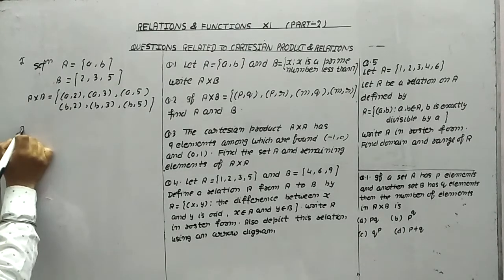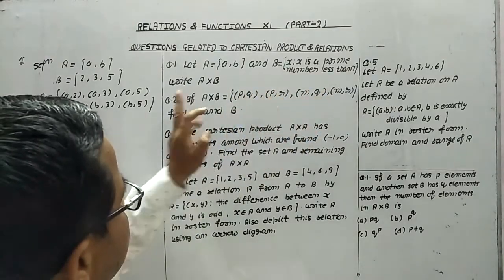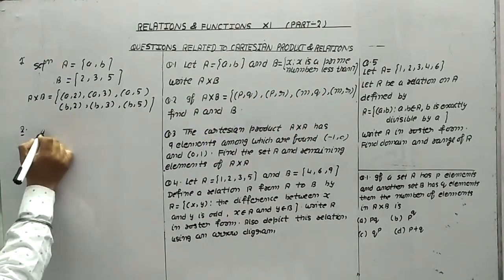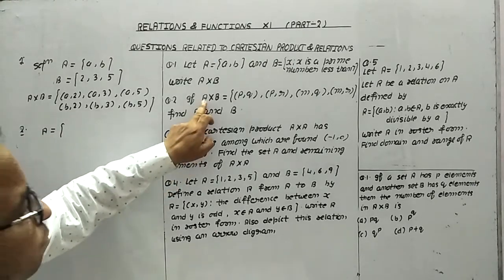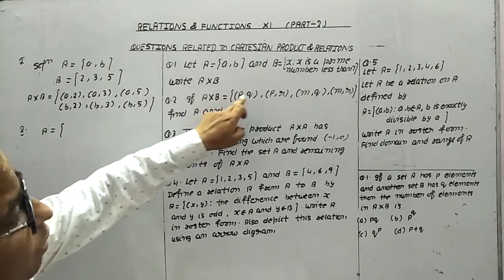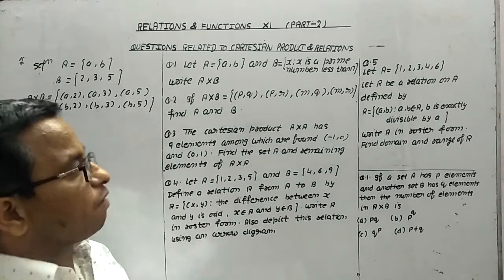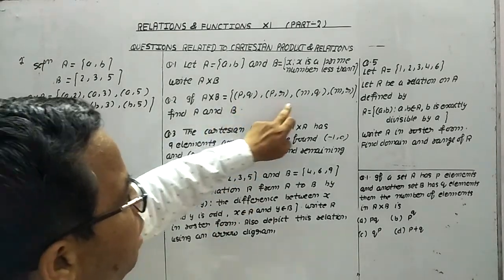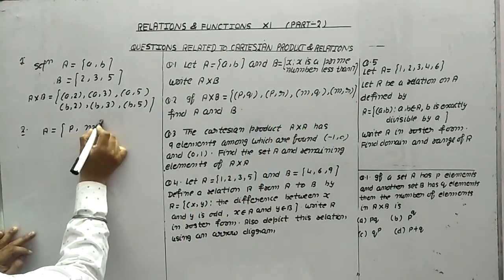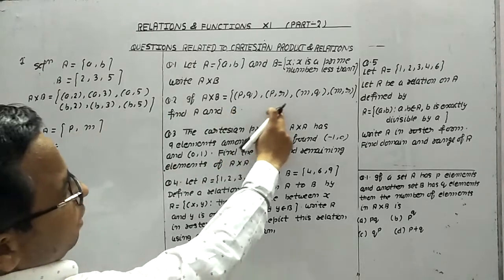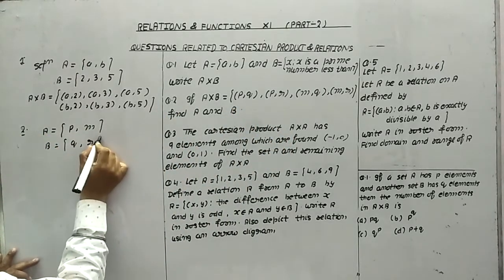Now come to question number two. In this second question, A cross B is given — find A and B. A means because A is the first place, it means all the first elements are in A. And in roster form, we write each element only once, so A is {P, M}. What will be B? B will be {Q, R}. So this is the answer.